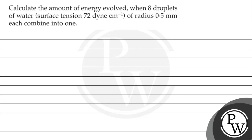Let's see the question. The question says: calculate the amount of energy evolved when 8 droplets of water with surface tension 72 dyne per centimeter of radius 0.5 mm are combined into 1. So the question is: when 8 droplets combine to form a bigger droplet, we have to find the amount of energy evolved.